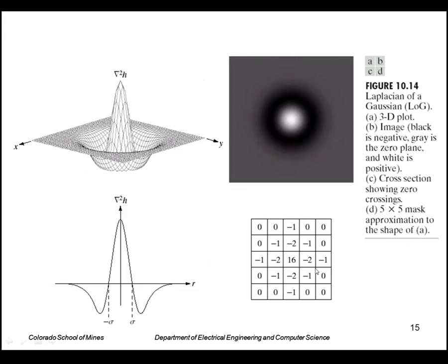This is a picture of that operator shown as a surface. Here they've actually flipped the sign so that the innermost part is positive and the outer parts are negative.